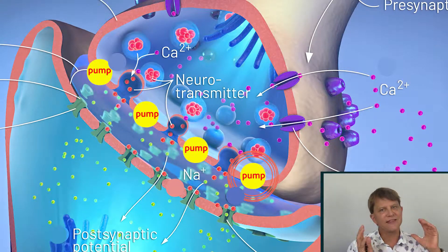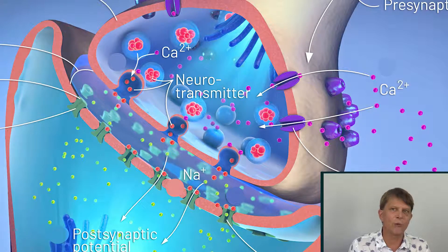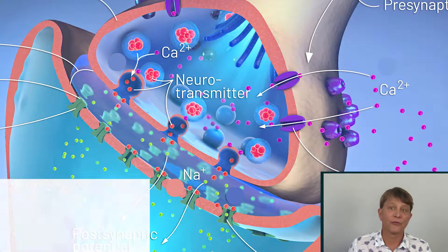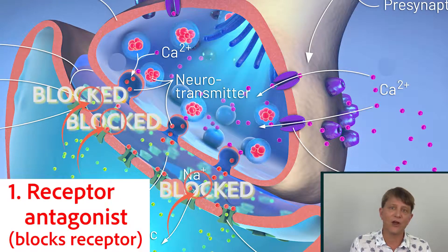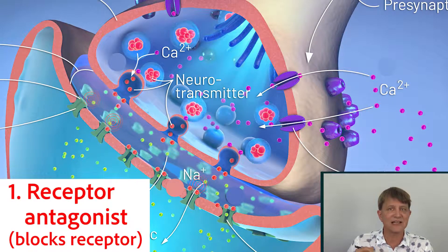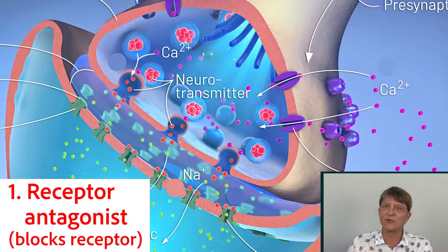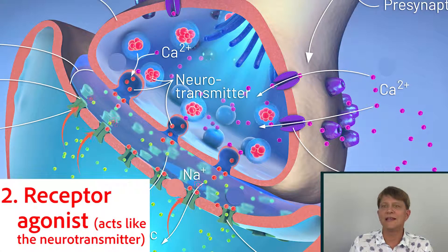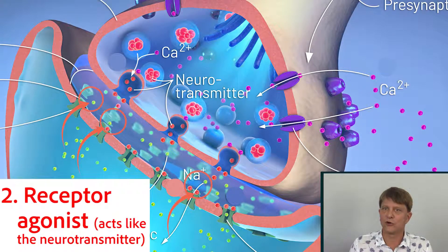Now let's take a look at the drugs — the general mechanisms by which our drugs act. There are a number of ways. The first is an antagonist: a drug that binds to the receptor on the second neuron and prevents the neurotransmitter from binding to that receptor. A second way is an agonist, which binds to that same receptor and causes the same physiological response as the natural neurotransmitter would.